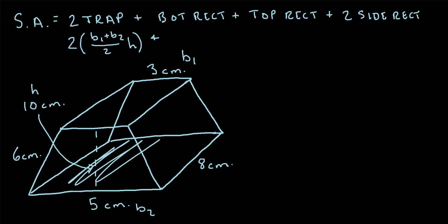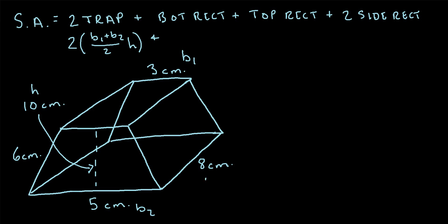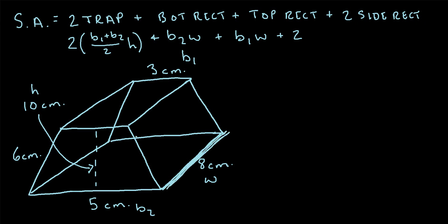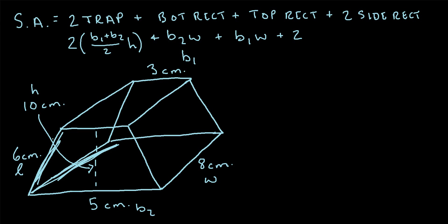Next, we have to find the area of the bottom rectangle. That's just b2 times w — the width is eight centimeters. So we'll say b2 times w. For the top rectangle, we do b1 times w. And then lastly we have two times the side rectangle areas. The side rectangles have a dimension of eight, and we multiply by the slant height, which is six centimeters — so let's call that l. The slant height times the width gives us the area of the two side rectangles: l times w.